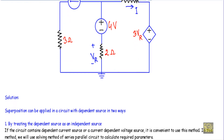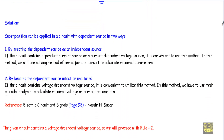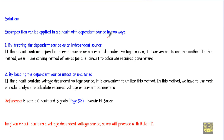When a circuit contains a dependent source and we have to apply superposition theorem, we can proceed in two ways. The first one is by treating the dependent source as an independent source, and the second one is by keeping the dependent source intact or unaltered. In the first method, we keep the dependent source active separately like our independent sources — if it is a current source, replace it with an open circuit; if it is a voltage source, replace it with a short circuit.